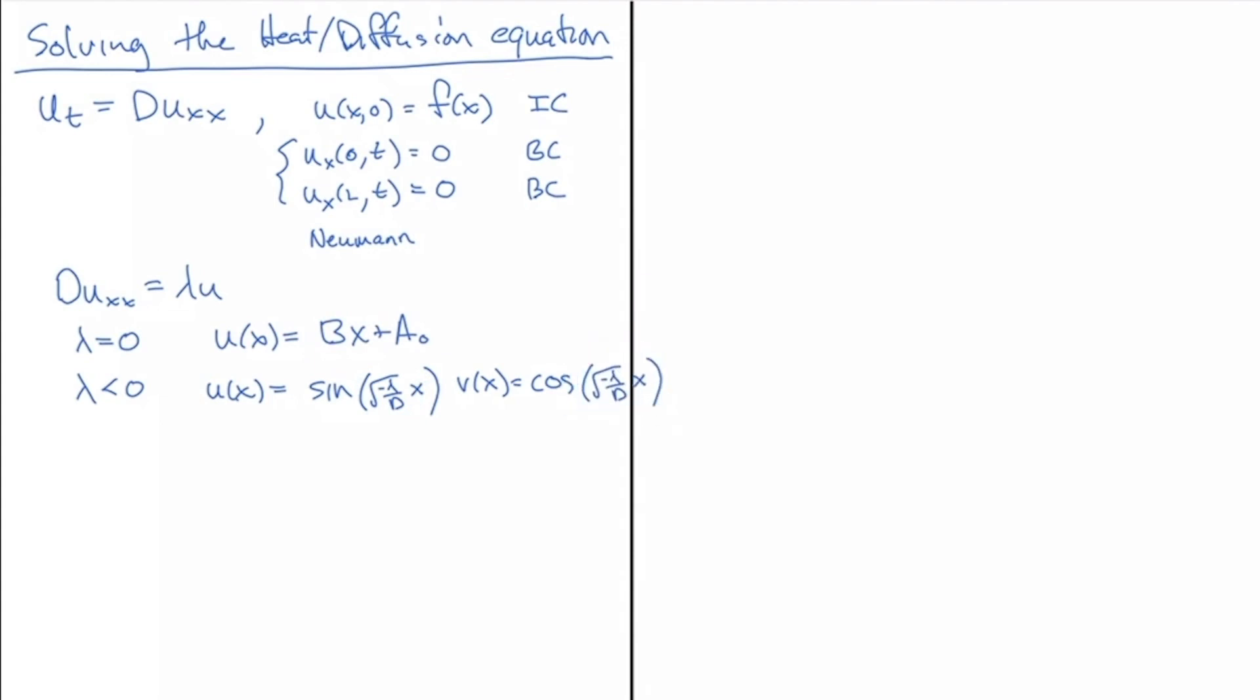So, these are the functions that we're interested in using to solve our PDE. So with the Dirichlet conditions, we found that the cosine functions were not useful because they didn't satisfy the boundary conditions.